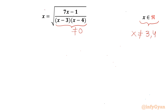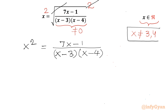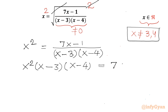Now I will consider squaring both sides — power 2 on each side. The square root and square cancel out, so we get x squared equals (7x minus 1) divided by (x minus 3)(x minus 4). Since x is not equal to 3 and 4, we can cross multiply: x squared times (x minus 3)(x minus 4) equals 7x minus 1.